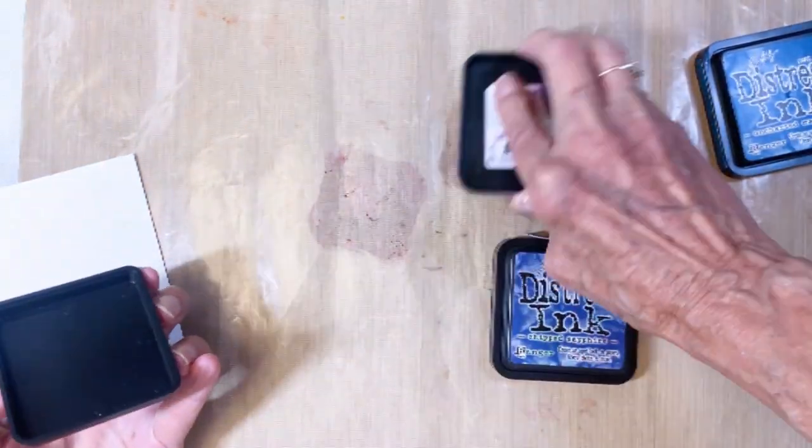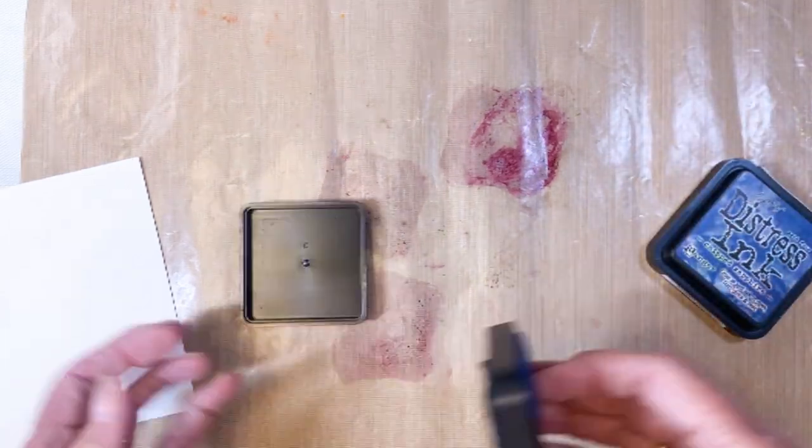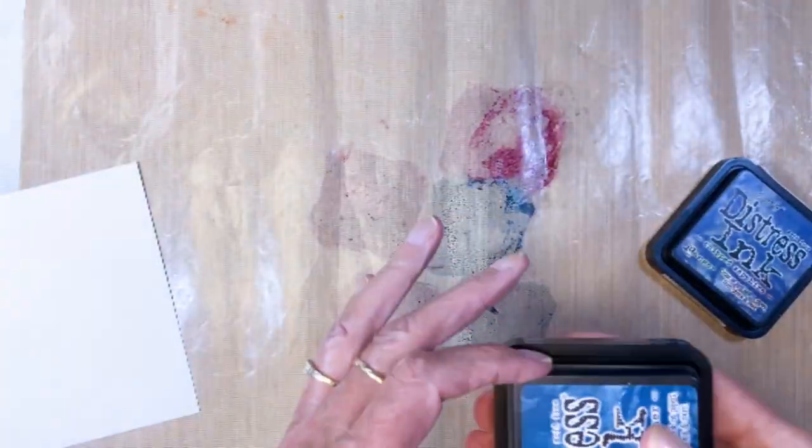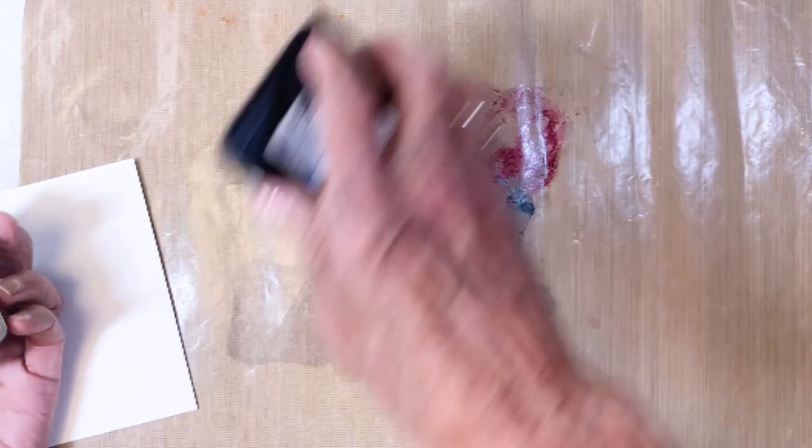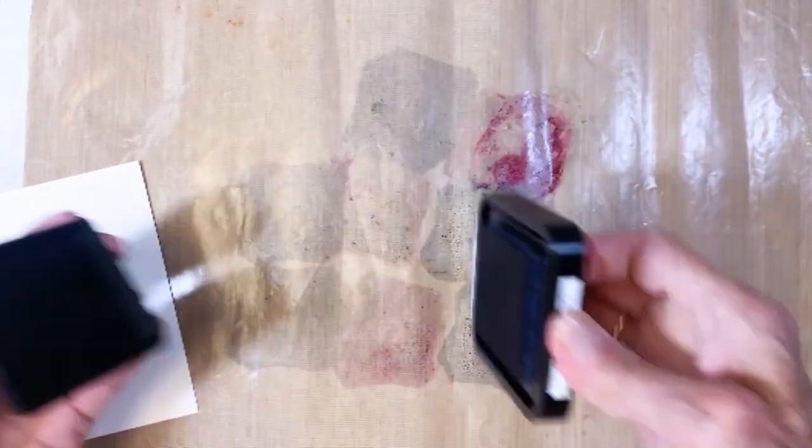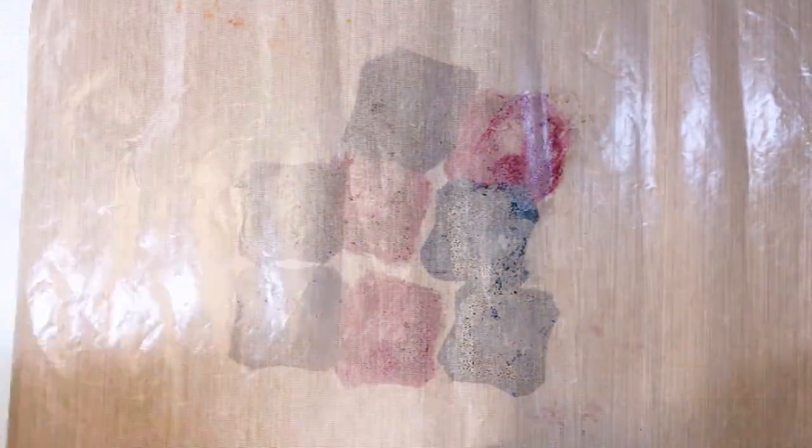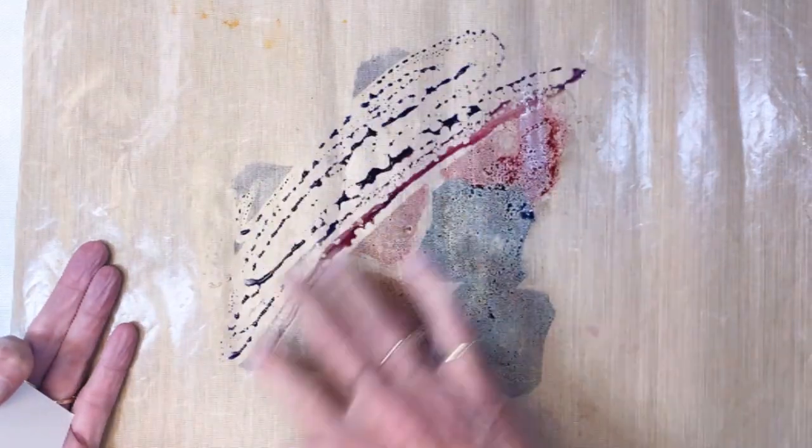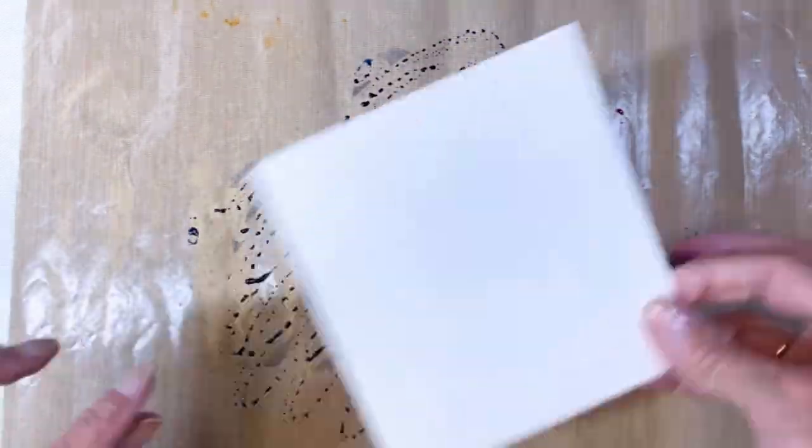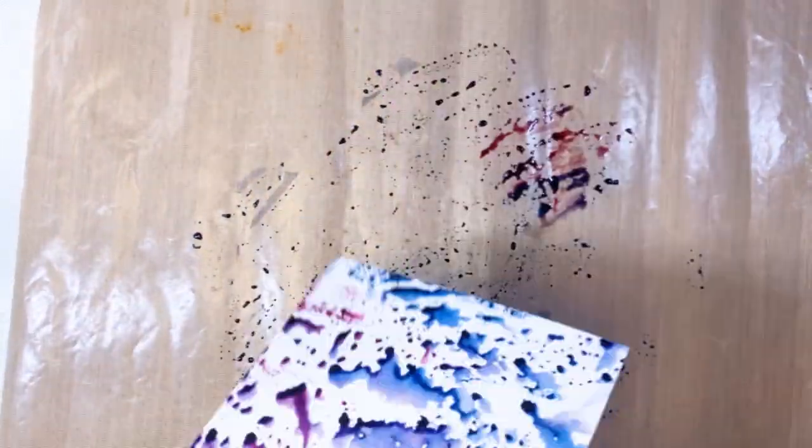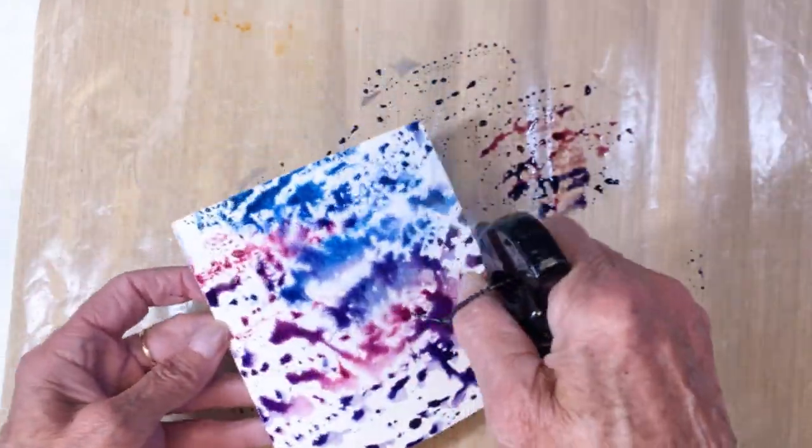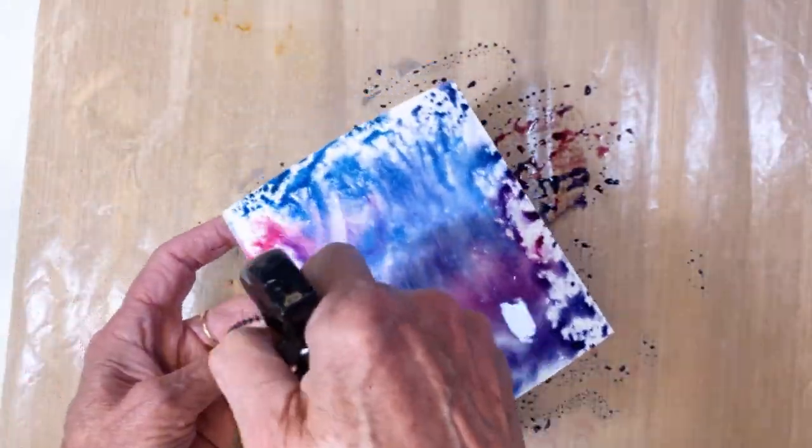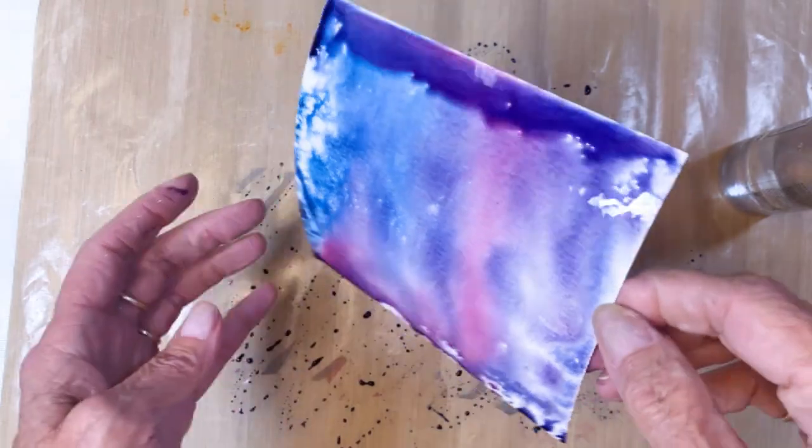So I started using Seedless Preserve, Chipped Sapphire, and Uncharted Mariner. I wanted a very deep, dark purple background. I'm playing with some watercolor paper, and here's where you get inky by mixing them all together. When I picked it up, I just added some more water.